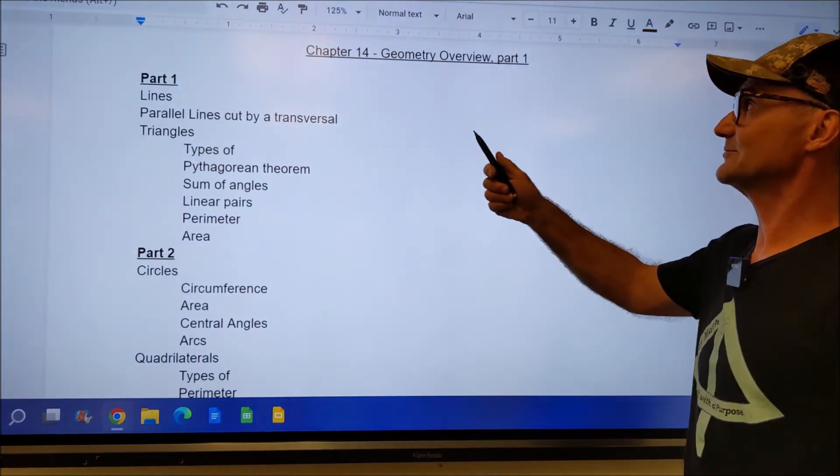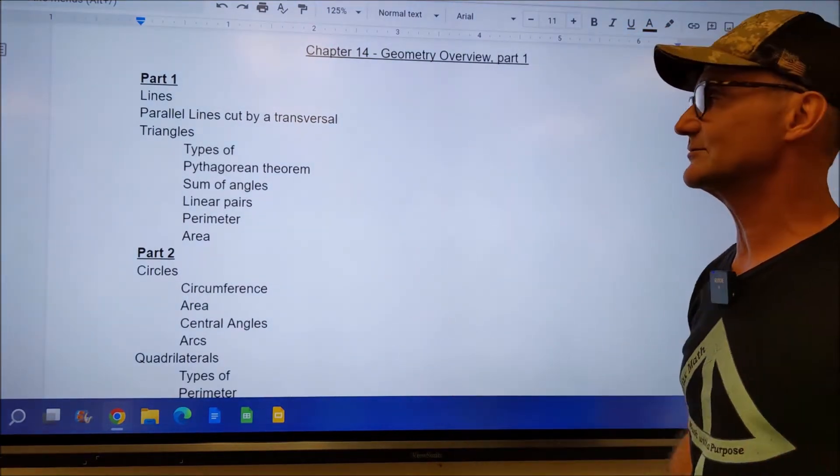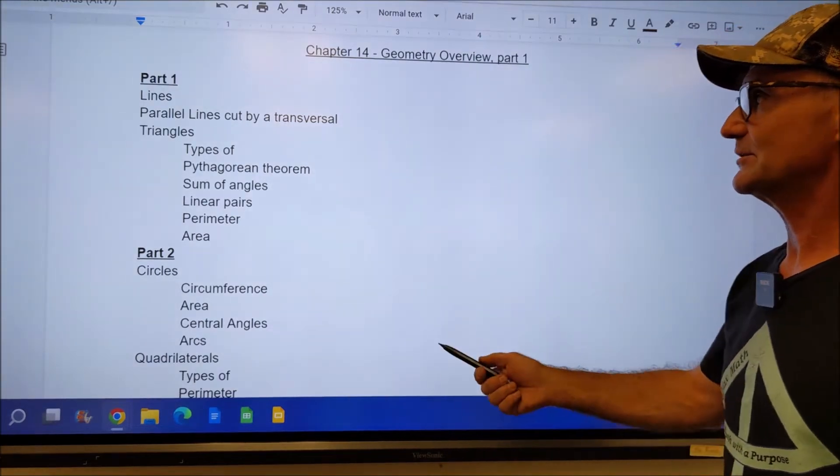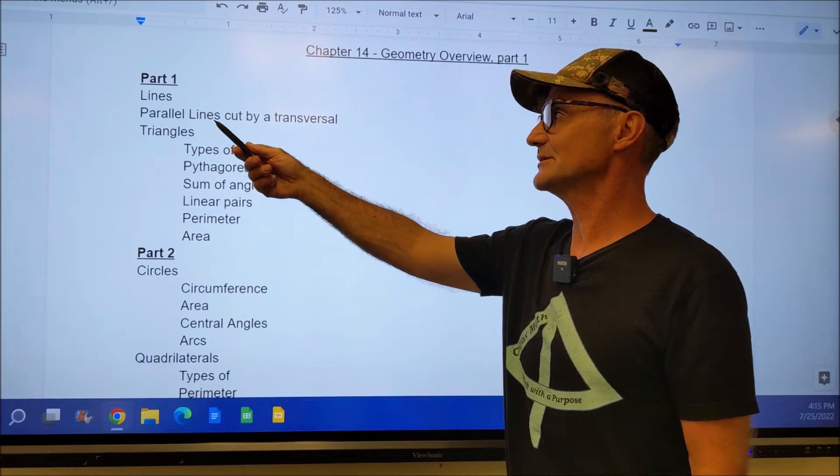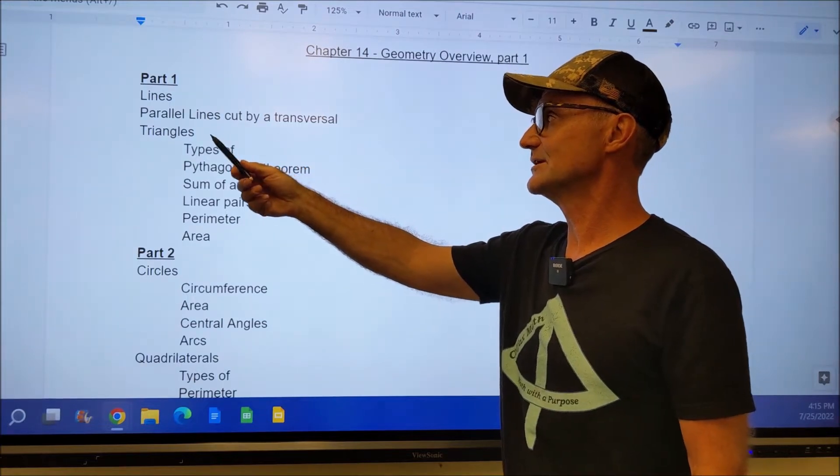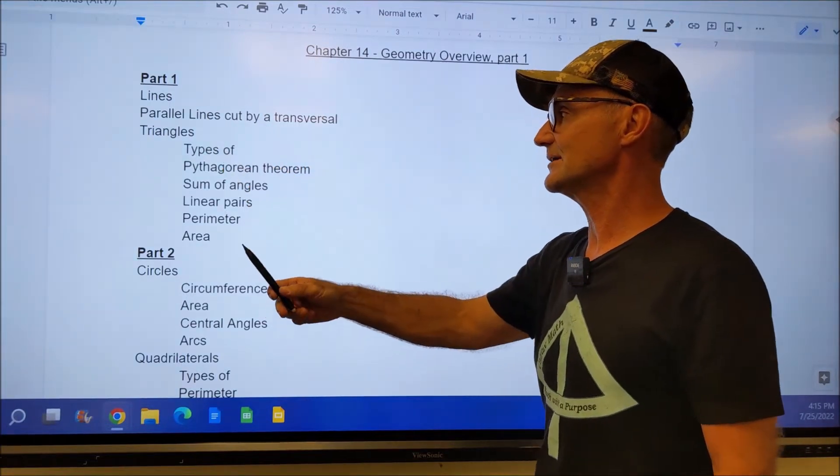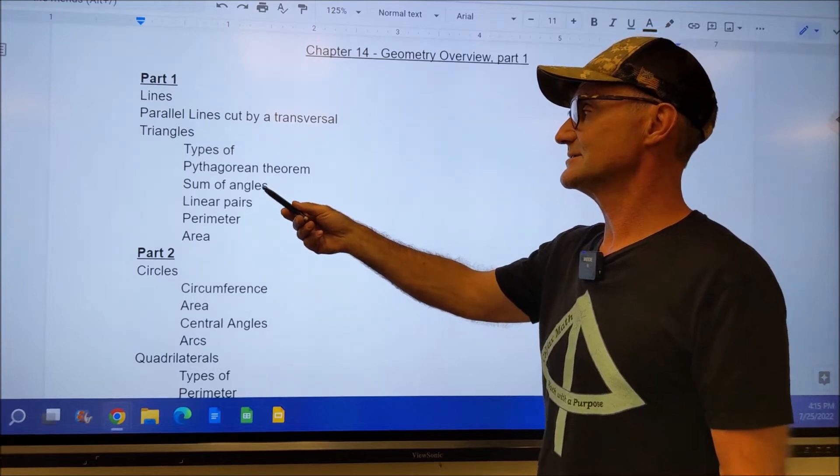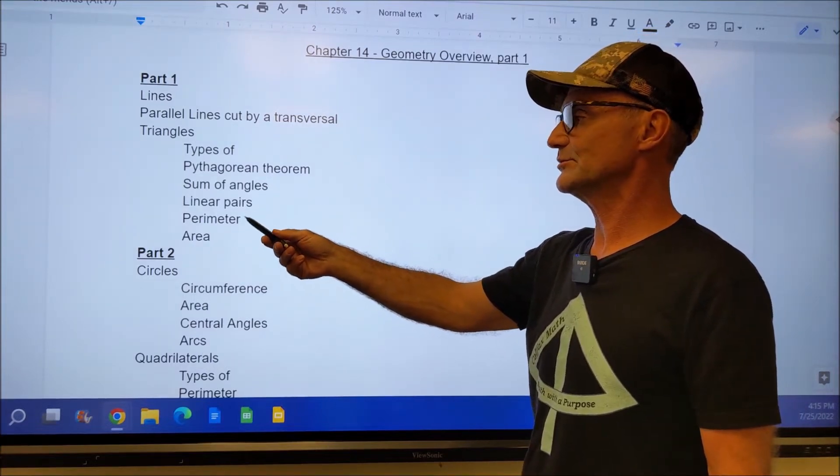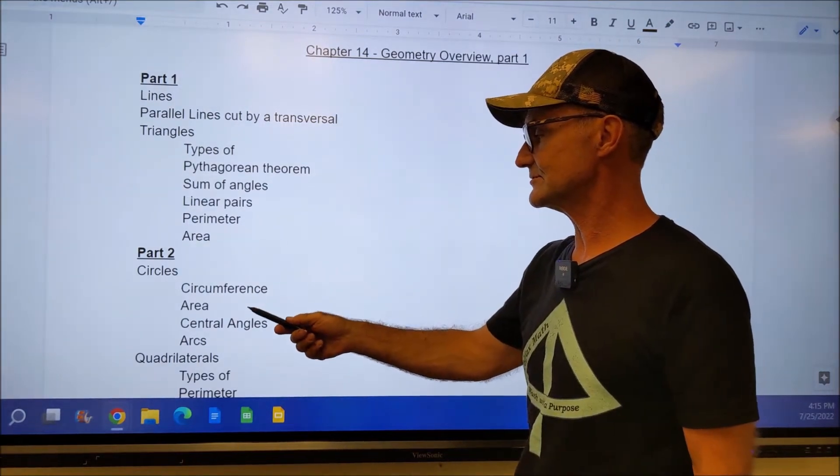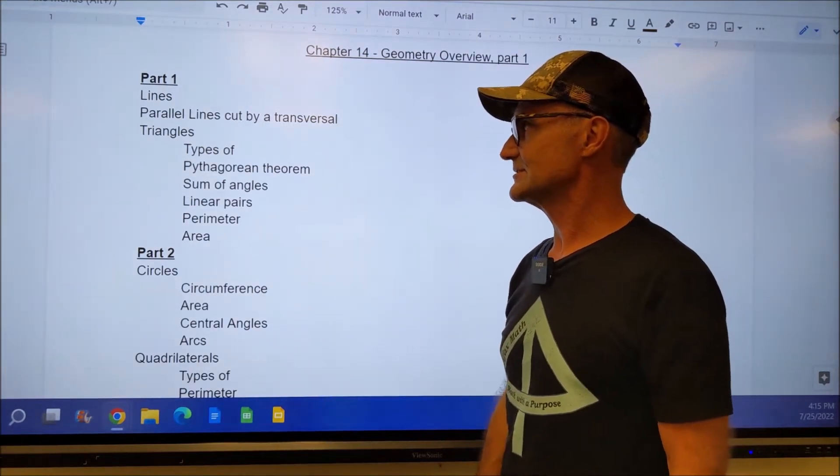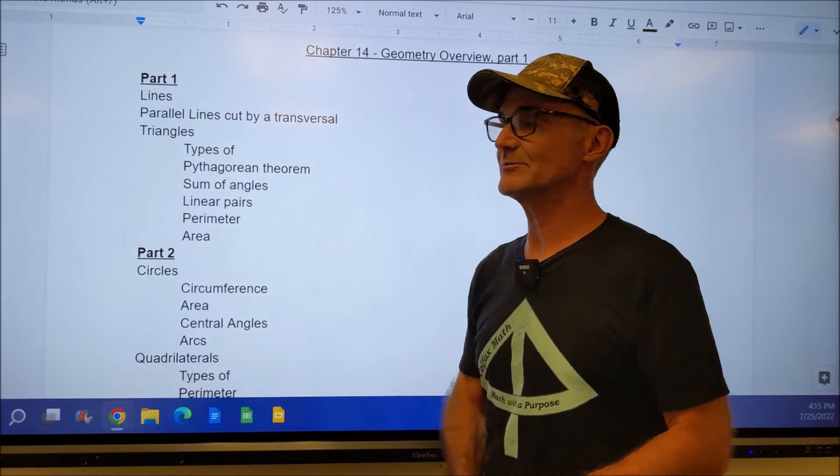This is Chapter 14, a very broad overview on geometry. I split it into two parts. Part one, what we're going to go over is lines, parallel lines cut by a transversal, triangles, the different types of triangles, Pythagorean theorem, sum of angles, linear pairs, perimeter, and area. In part two, we're going to go over circles and quadrilaterals. So let's go ahead and start right here on part one.